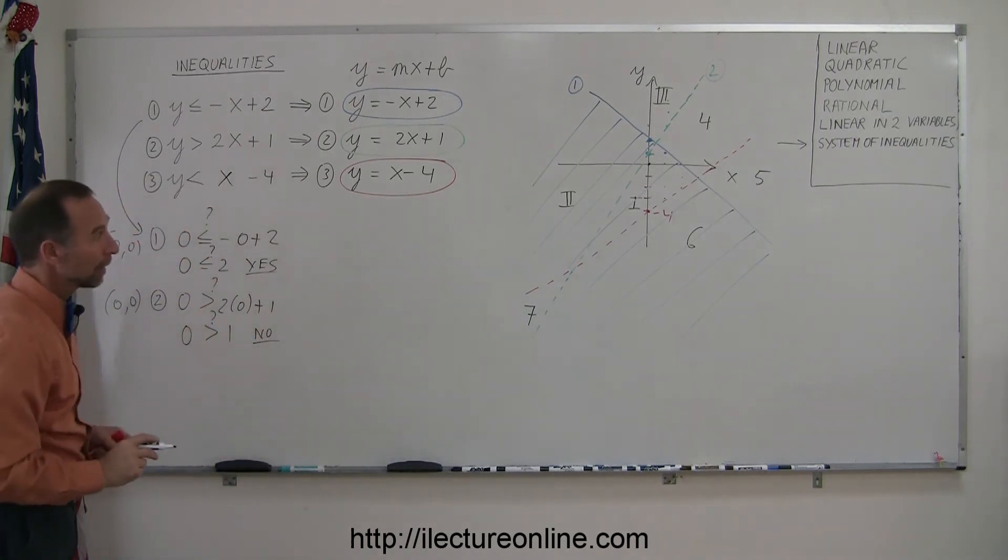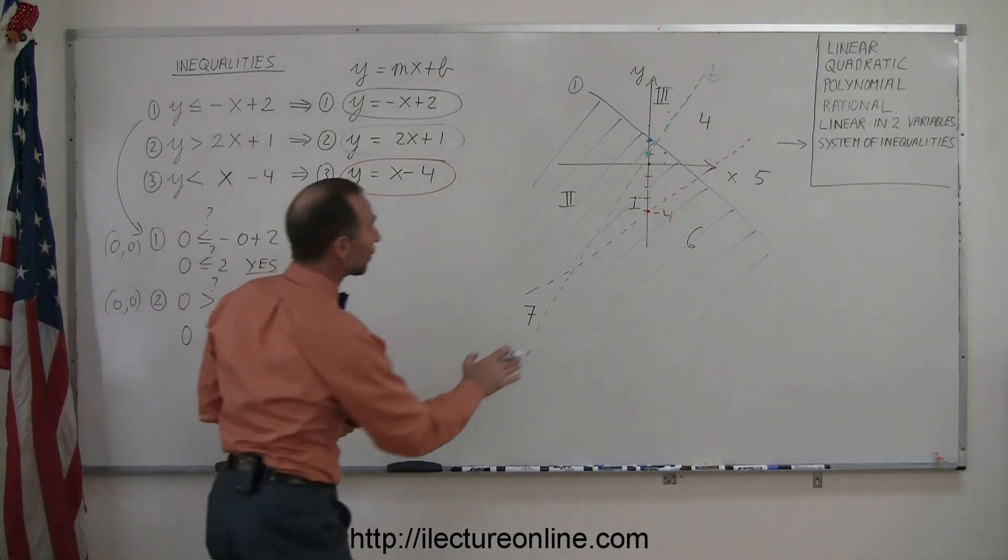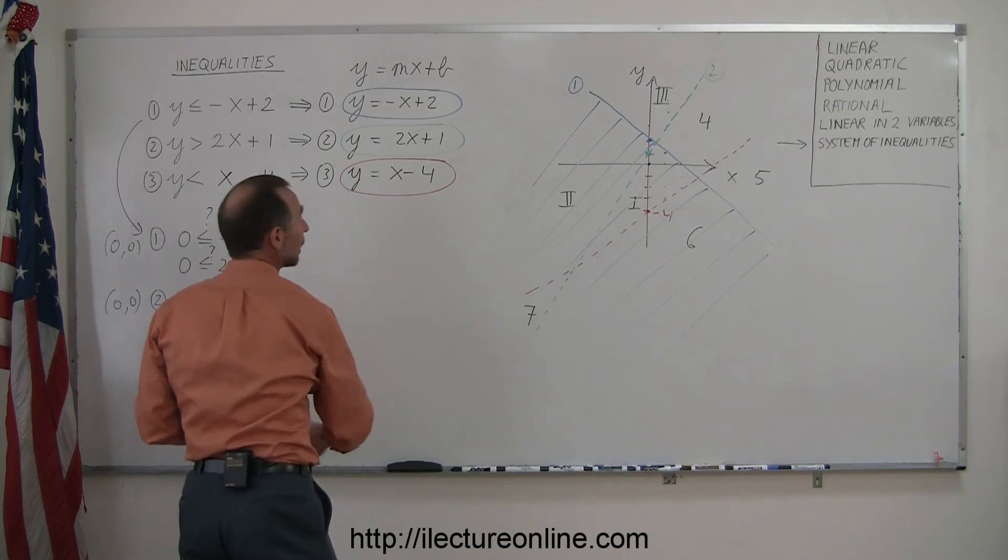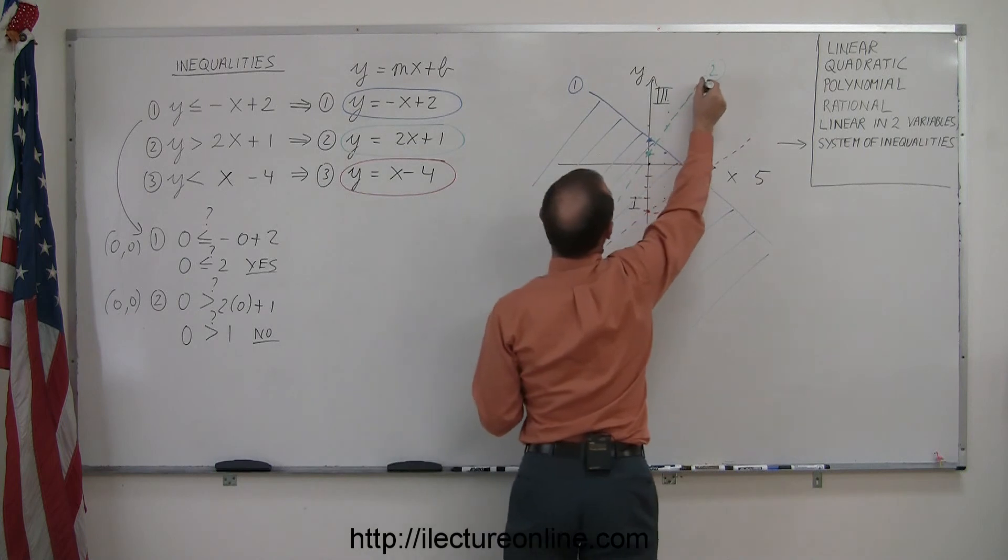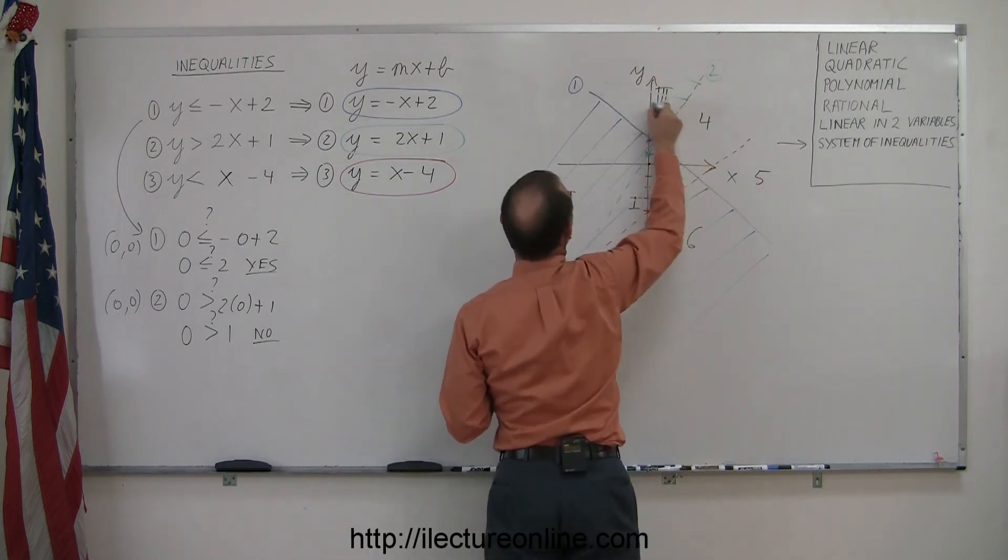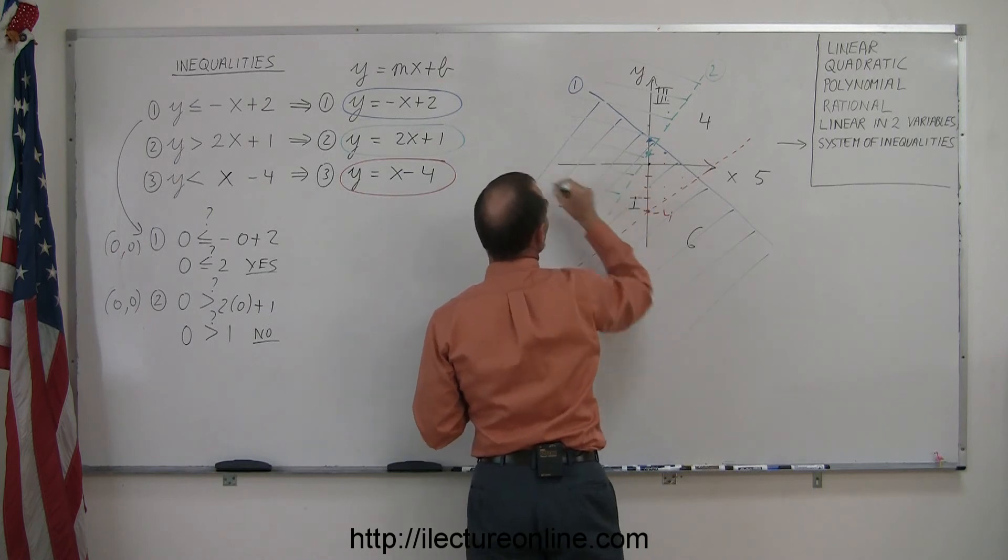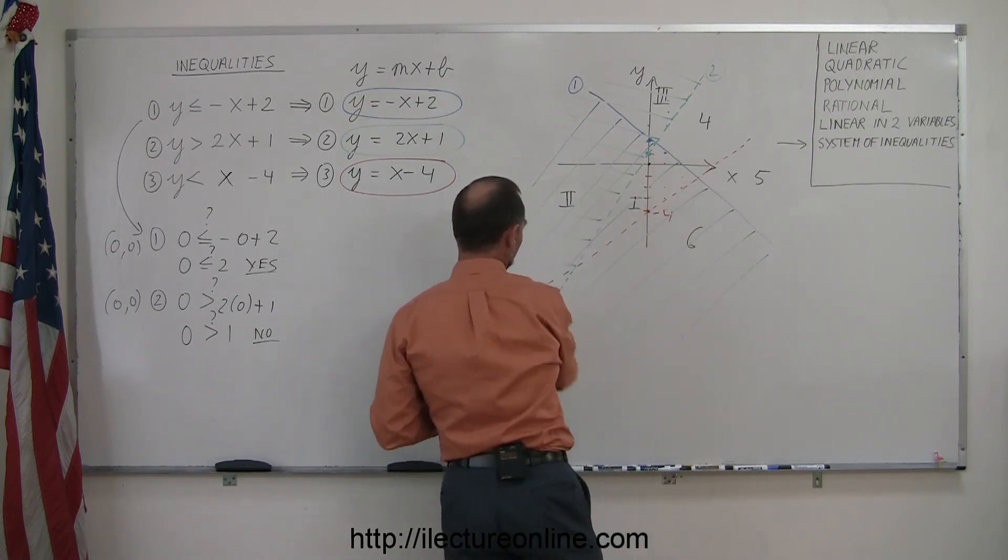So, it does not, which means I pick the point that does not lie in the region that satisfies the inequality, the second inequality right there, which means this side is not the solution, this side is the solution, so I can go ahead and indicate that by shading this region, the other side of where I can find (0, 0). There we go.